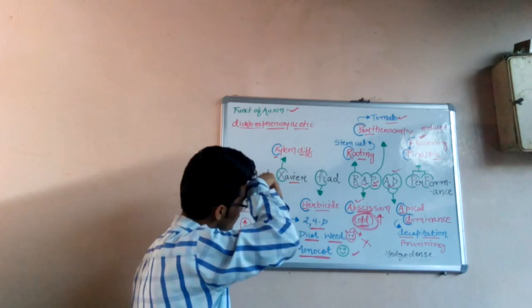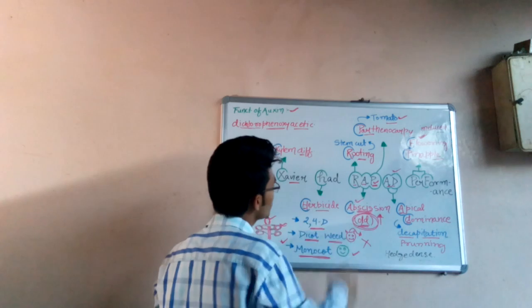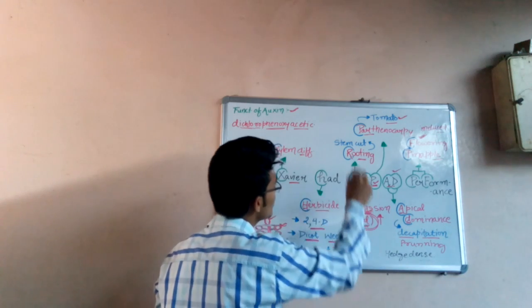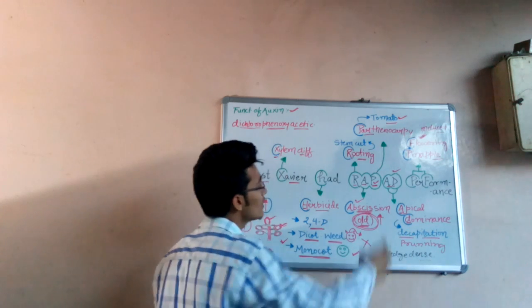RAP, which is R-A-P, where R means rooting, A means abscission, P means parthenocarpy. AD simply means apical dominance, which is a single word.